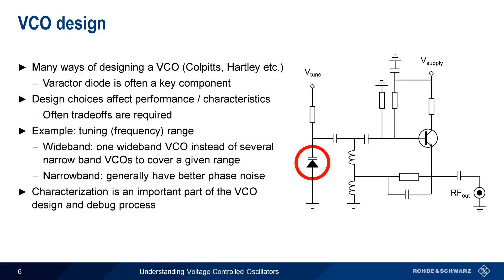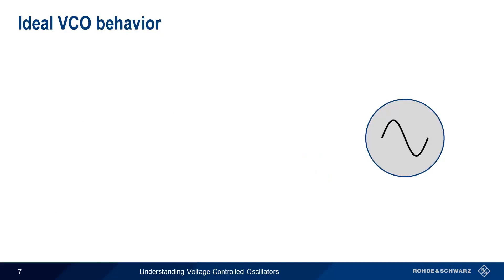Measuring the behavior, or characterizing the VCO, is therefore an important part of the VCO design and debug process. Aside from basic parameters like frequency range and output power, characterization is often concerned with how much our VCO deviates from ideal behavior.